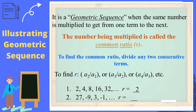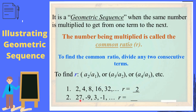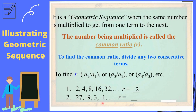What about in example number 2? What is the common ratio? To find the common ratio, divide A sub 2 by A sub 1. So negative 9 divided by 27 is equal to negative 1 third. 3 divided by negative 9 is negative 1 third also. And negative 1 divided by 3 is negative 1 third. So therefore, it is a geometric sequence and the common ratio is negative 1 third.